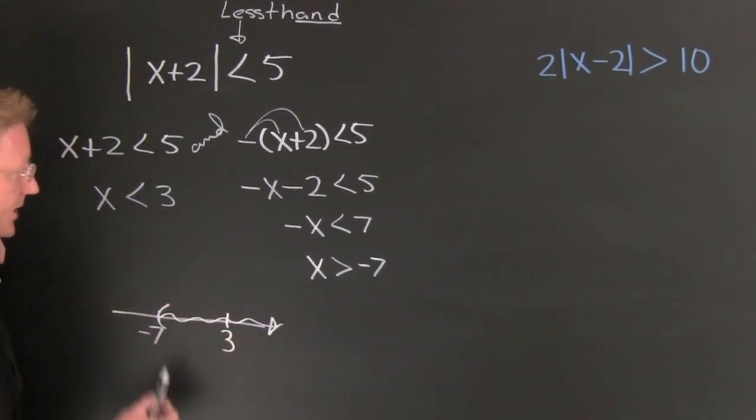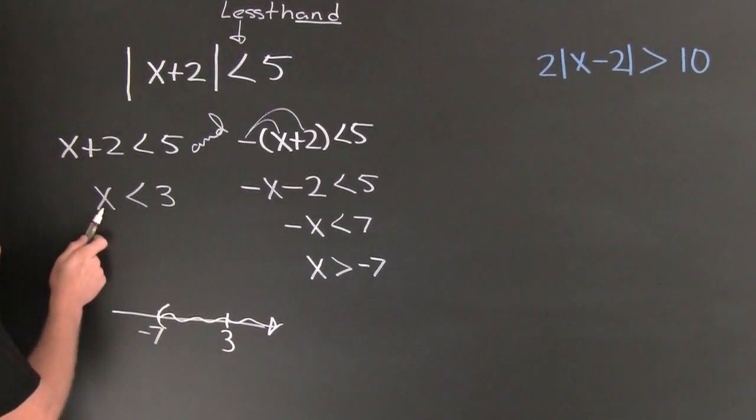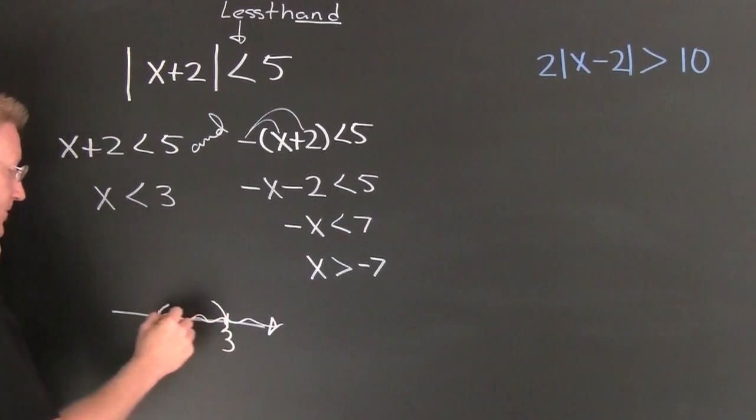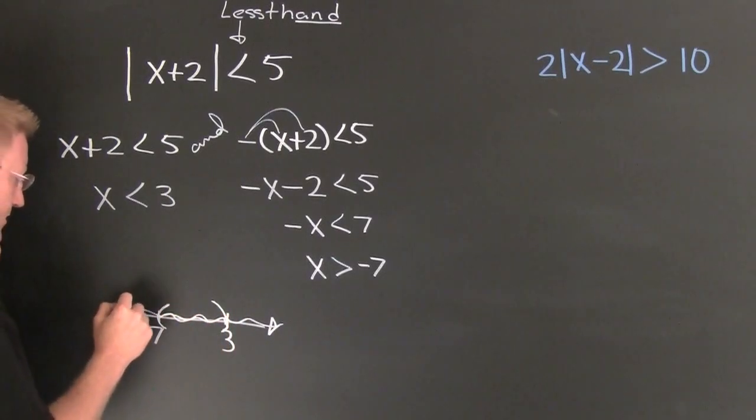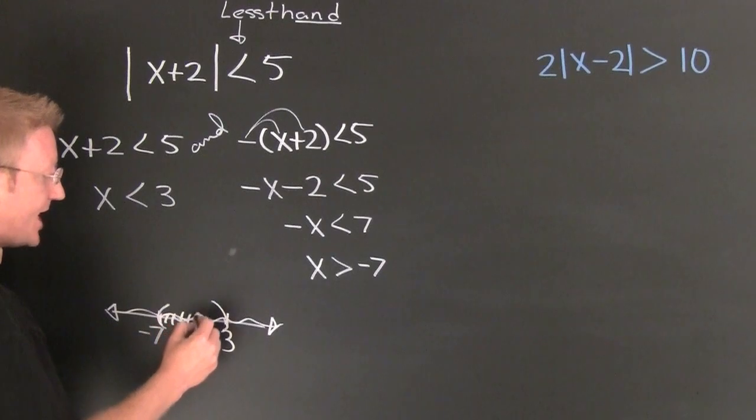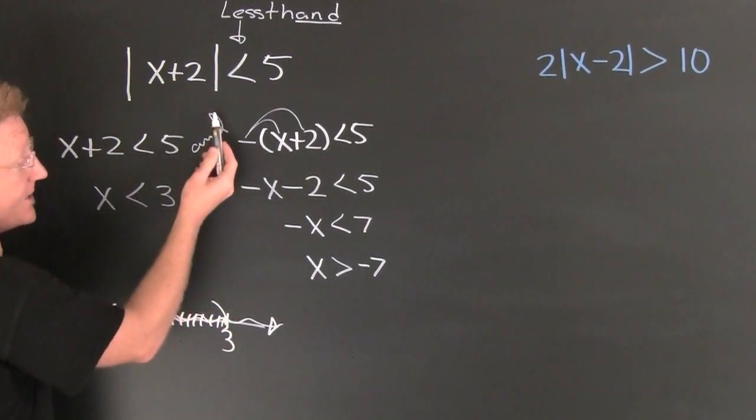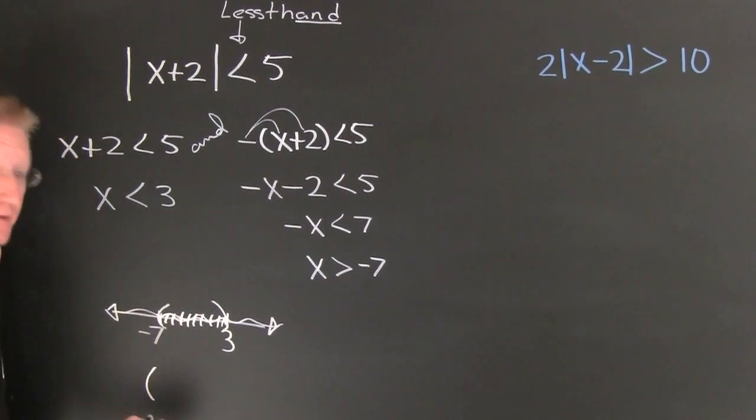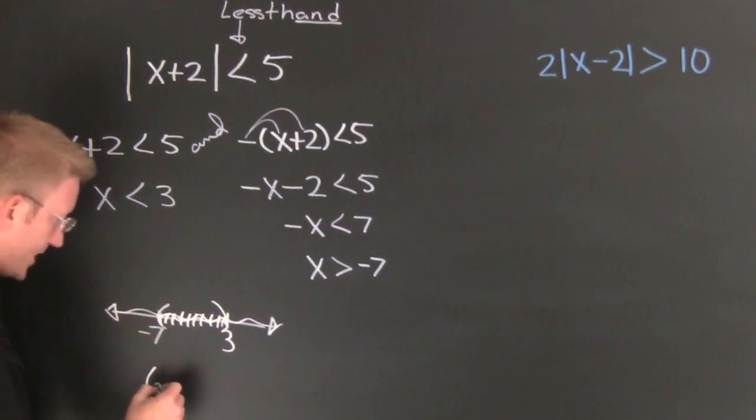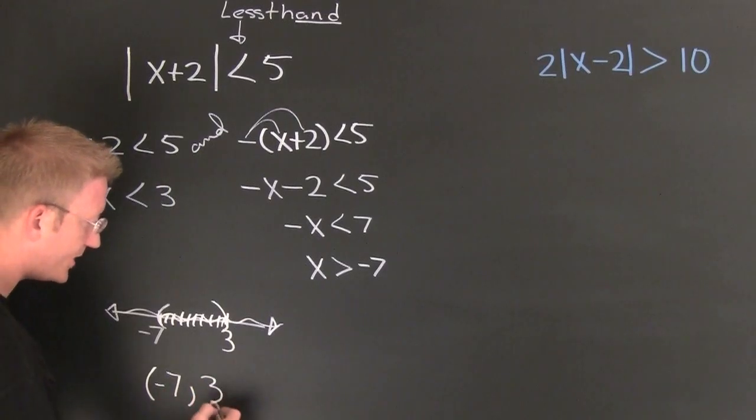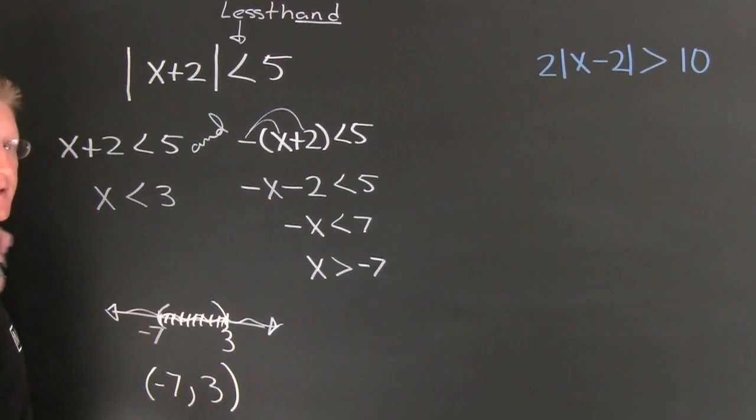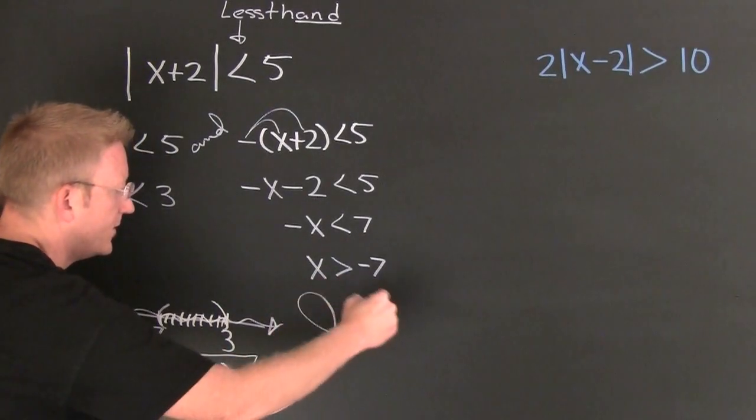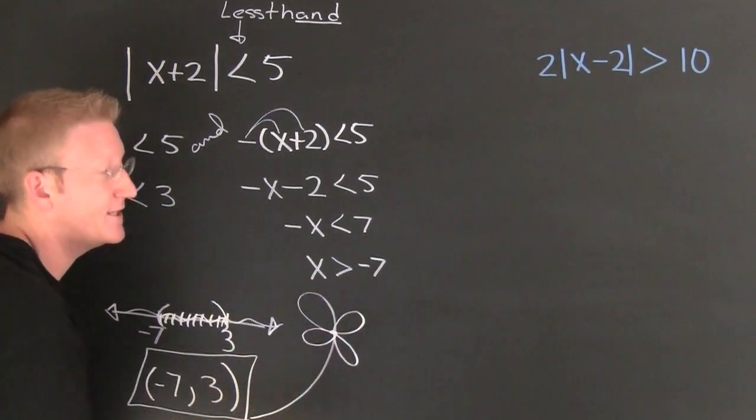Over here at 3, that one says shade that way. As long as the x is on the left you can shade that way, so that one's also open. Now this is the 'and' case. When it's the 'and' case we're looking for the overlap. So we see in interval notation the solution set is negative 7 to 3.